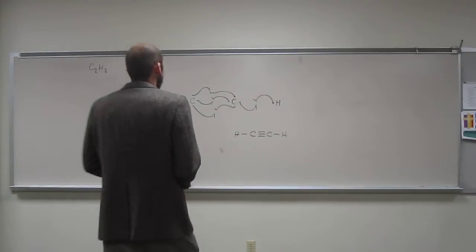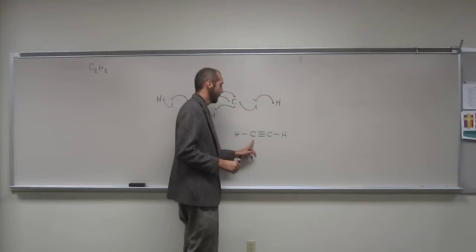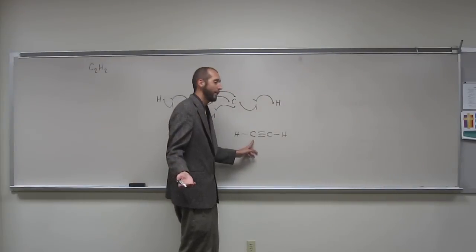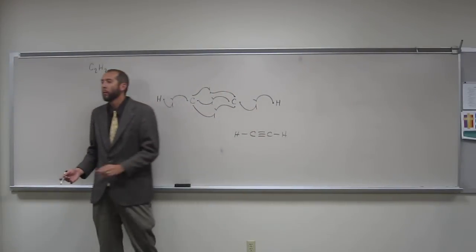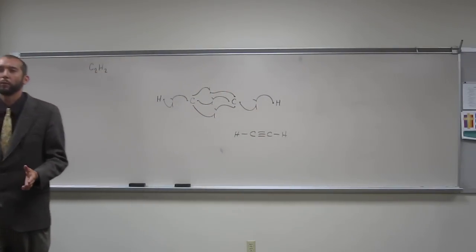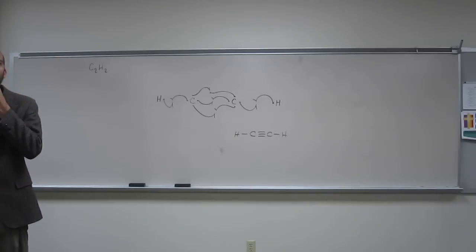So how many electron groups do we have around this carbon? Two. Everybody tell us. Two, right? So what's the bond angle between those two bonds? Everybody tell me. 180.